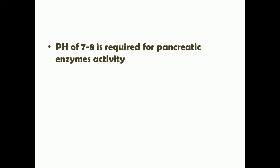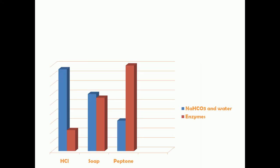The pH required for pancreatic enzyme activity is about 7 to 8 — that is, they are active at a mildly alkaline pH and inactive at acidic pH. The acidic pH entering the duodenum is overcome by the sodium bicarbonate present in pancreatic juice. That is the main function of sodium bicarbonate in pancreatic secretion.